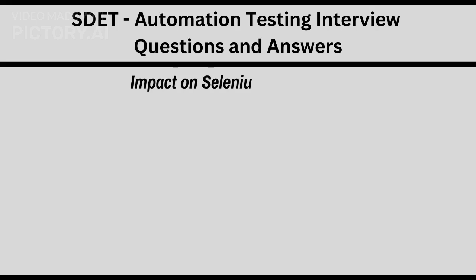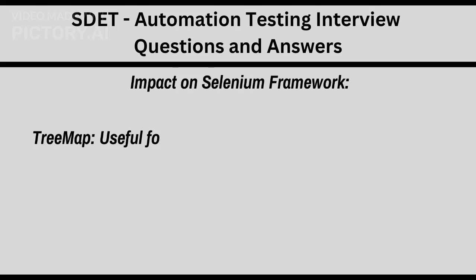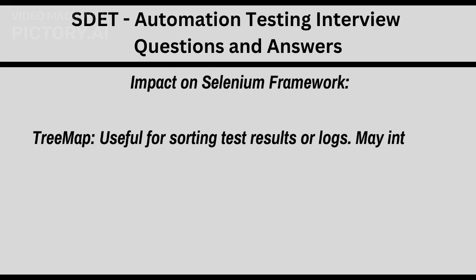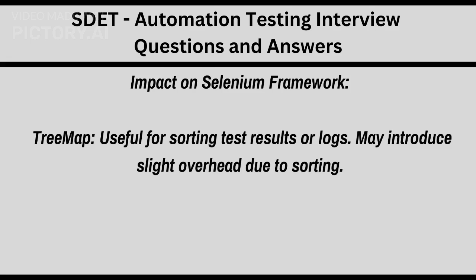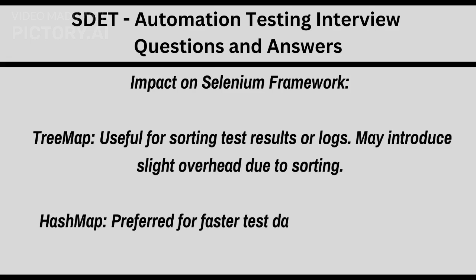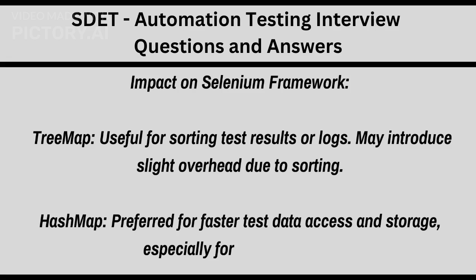Impact on Selenium framework: TreeMap is useful for sorting test results or logs, but may introduce slight overhead due to sorting. HashMap is preferred for faster test data access and storage, especially for large datasets.